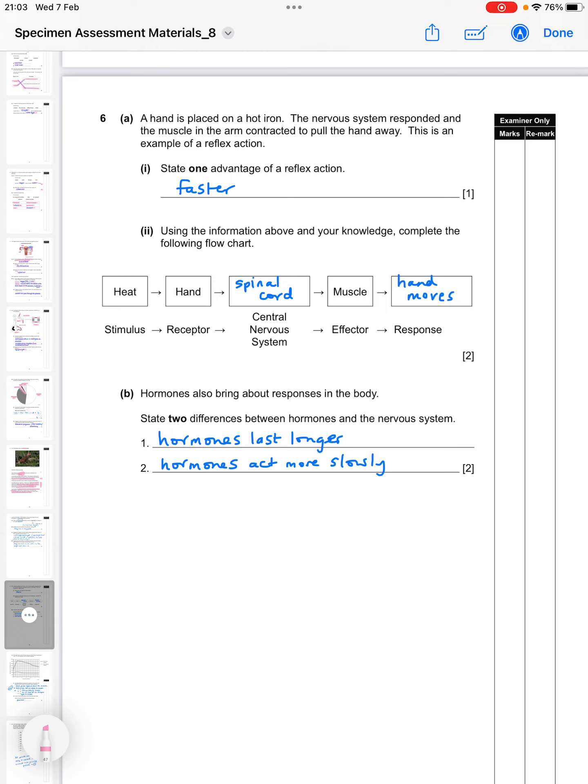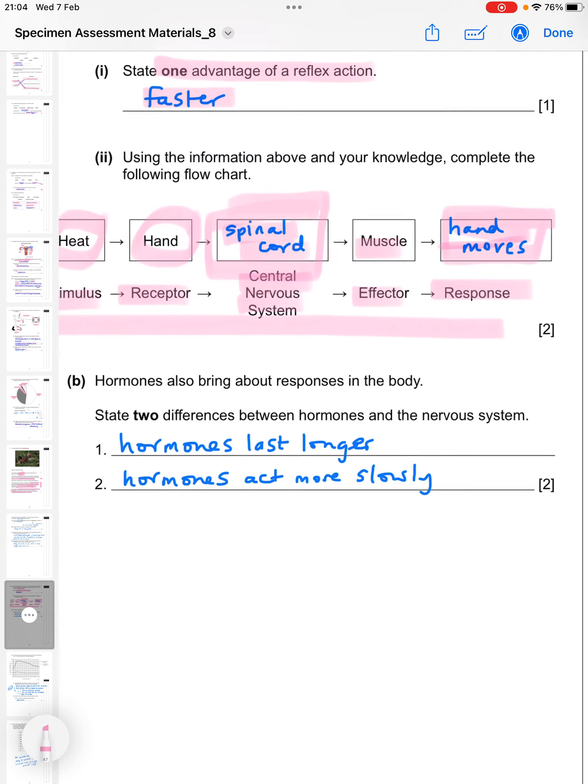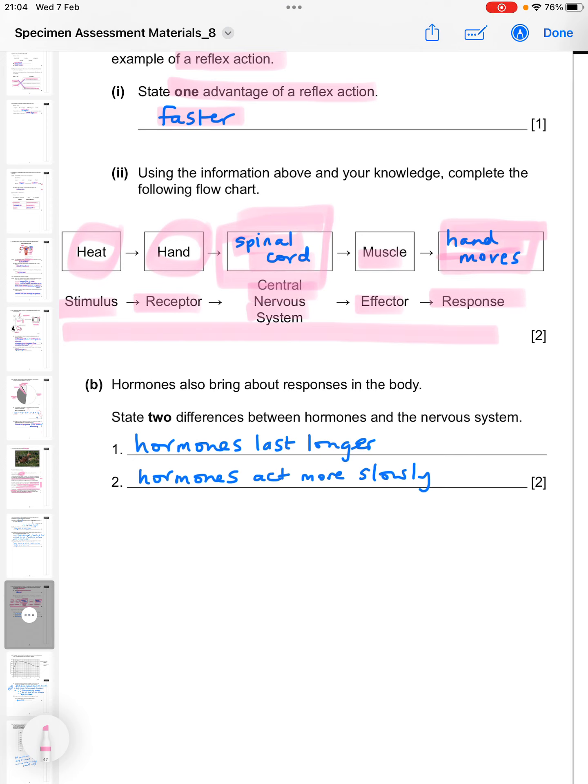Number six, the hand is placed on a hot iron, the nervous system responded and the muscle in the arm contracted to pull the hand away. This is an example of a reflex action. So then suggest one advantage of a reflex action. You could say it's faster, you could say it's like a protective response, or you could say that it doesn't involve having to think about it, but just saying it's faster is fine. Then using the information above and your knowledge complete the following flow chart. So we have stimulus to receptor to central nervous system to effector and then the response. So the stimulus that tells you is heat, the receptor is the hand, the central nervous system because it's a reflex would be the spinal cord, the effector we're given is the muscle, and then the response is some way of describing that the hand moves away from the heat. And B, hormones also bring about responses in the body. Two differences between hormones and the nervous system. Well you could have quite a few here but simply hormones last longer in your system and hormones act more slowly as well.